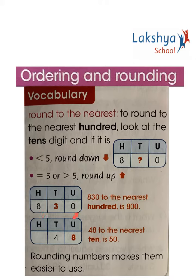Let's take an example: the number 830. We need to look at the tens digit — it is less than 5, so we need to round it down. 830 rounded to the nearest hundred is 800.